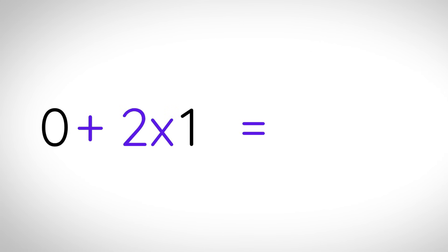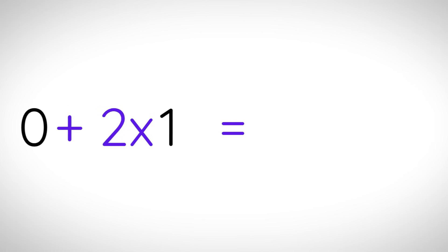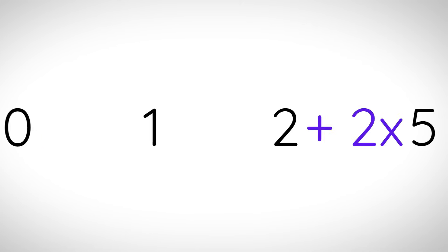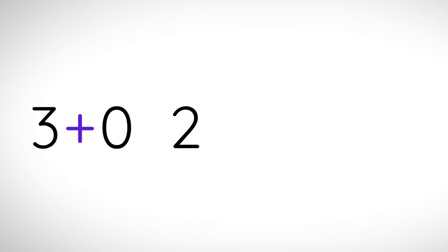Pell primes: start with zero and one, and then to get the next number you do two times the previous one plus the one before that. These are the Pell numbers and some of them are prime. Perrin primes: start with 3, 0, 2, then the next number is the value two steps back plus the value three steps back. These are the Perrin numbers and some of them are prime.